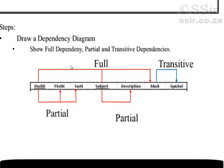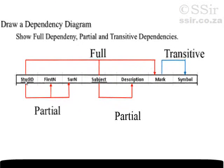We do this by writing down all the fields next to each other with the primary keys underlined. We then indicate with red and blue arrows which are the full dependencies, the partial dependencies, and the transitive dependencies.